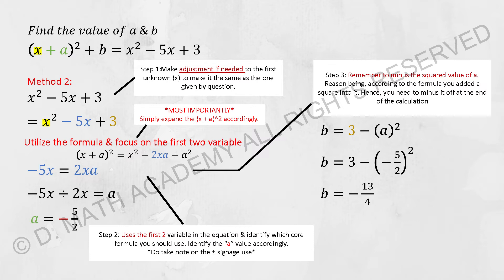When you put it in, a² will result in 25/4. So since you know that you will add it in already, for the b there, which is the constant, you are required to minus off what you have added in.